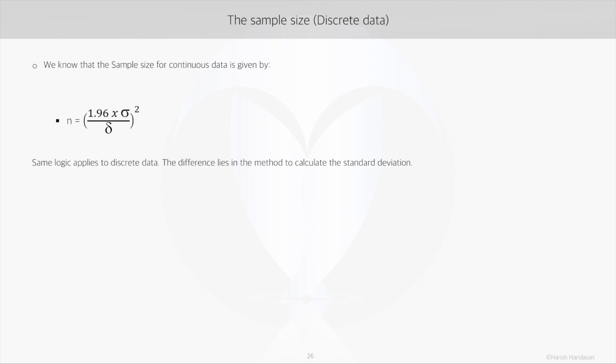As it is for continuous data, same logic applies to discrete data as well. The difference lies in the method to calculate the standard deviation. The method of estimating the standard deviation depends on the discrete data type and hence on the type of distribution that this set of discrete data follows.